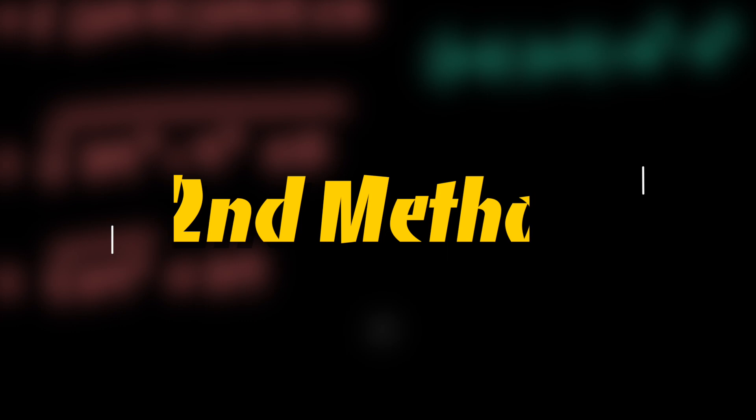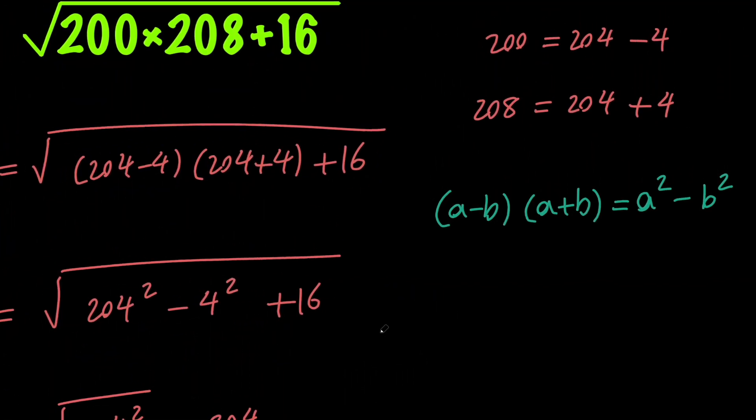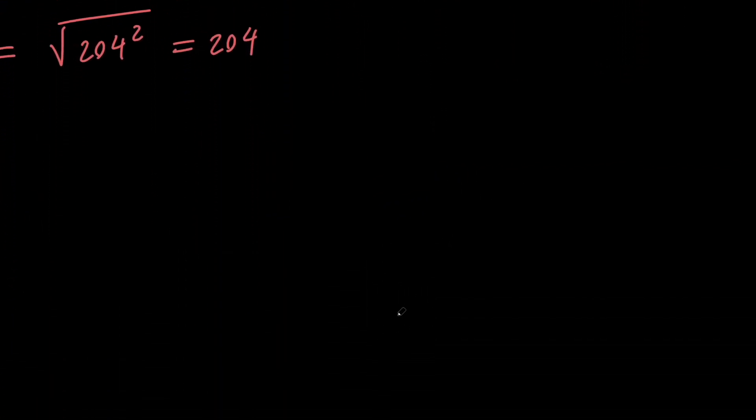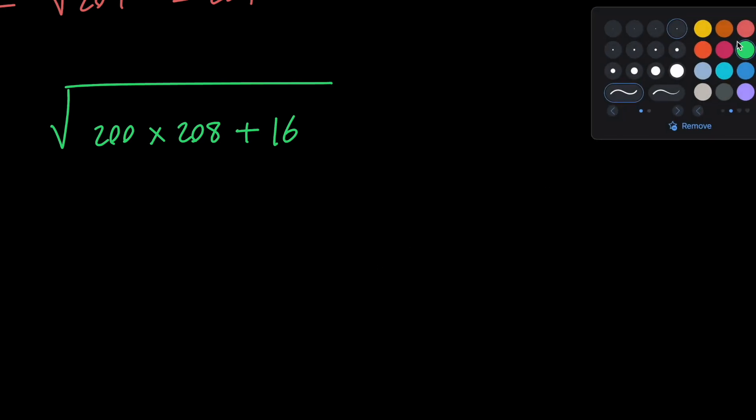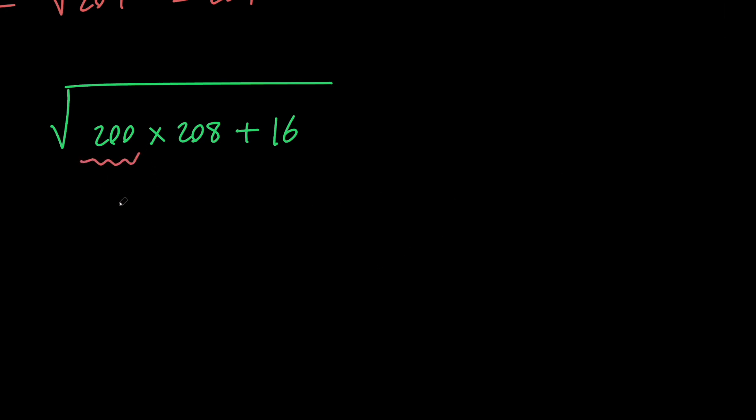Next, let's go ahead and use the second method to calculate our expression. So let me rewrite it down here. We want to calculate the square root of 200 times 208 plus 16. So let's go ahead and replace this 200 with x, and as a result of that, we can say that this is going to be x plus 8.